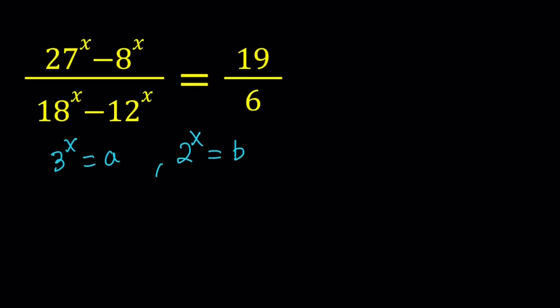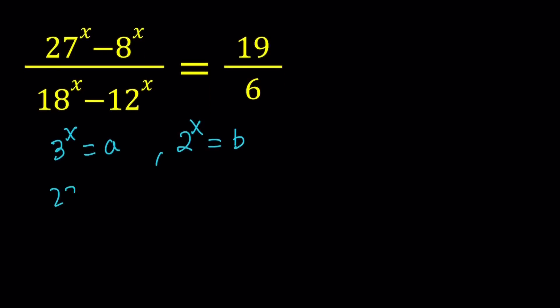And that implies the following. 27 to the power x basically can be written as 3 to the power x cubed, so we can write this as a cubed. And then 8 to the power x can be written as 2 to the x to the third, which is b cubed.